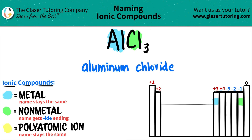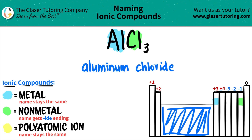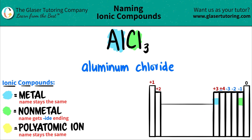Now, just check — does aluminum need a Roman numeral? No. Even though it's a post-transitional metal, it's not in this box. Usually any of the elements in here need a Roman numeral, but there are exceptions. Aluminum will always have a plus three charge, and therefore it never needs a Roman numeral — we know the charge. So this is the answer: AlCl₃ is just aluminum chloride.